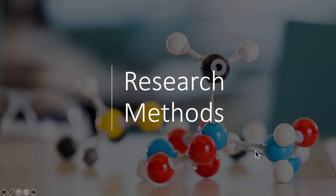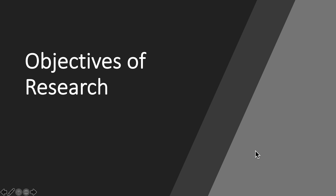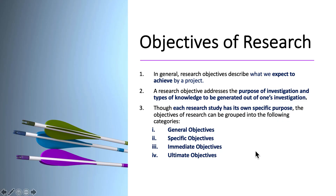Hello and welcome to the subject of research methods. We are going to talk about objectives of research. In general, research objectives describe what we expect to achieve by a project — what we want to do, what is our goal, what is our aim, and what exactly we want to get out of a research project.